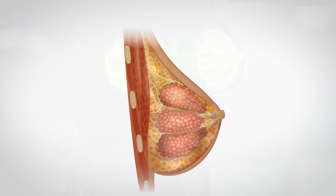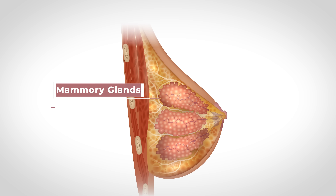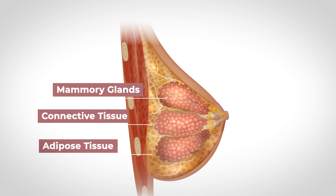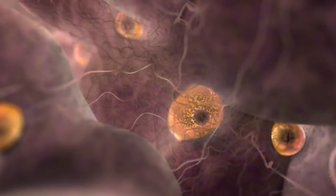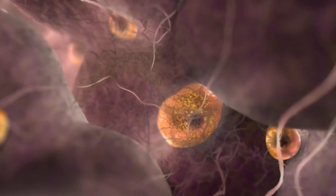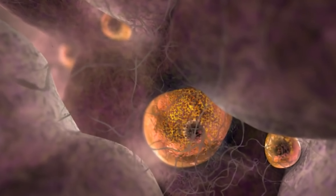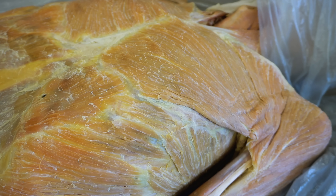The breasts are hemispheric projections that can be quite variable in size and are made up of mammary glands, connective tissue, and adipose tissue — which is just fatty tissue. The increase in estrogen during puberty stimulates the growth of the mammary glands as well as promotes increased deposition of fat, increasing the overall size and mass of the breasts during puberty.